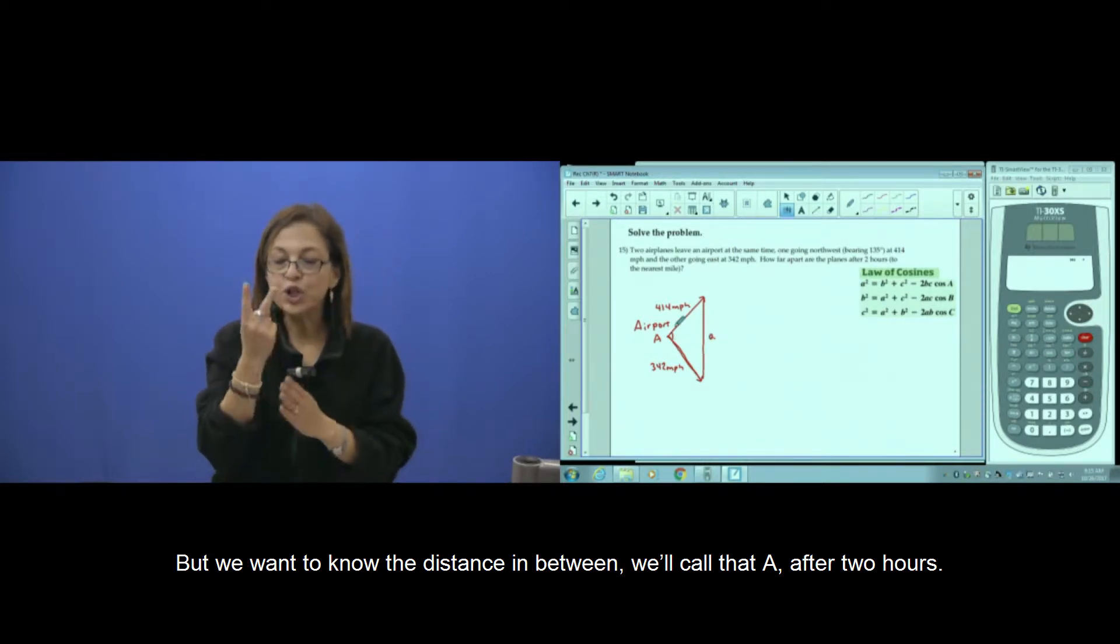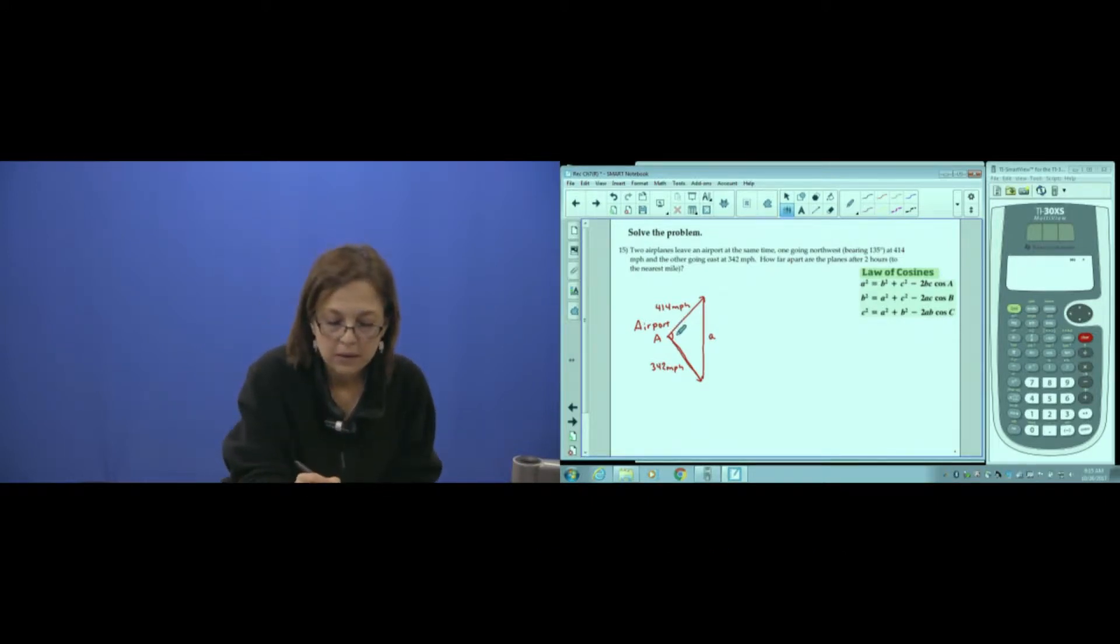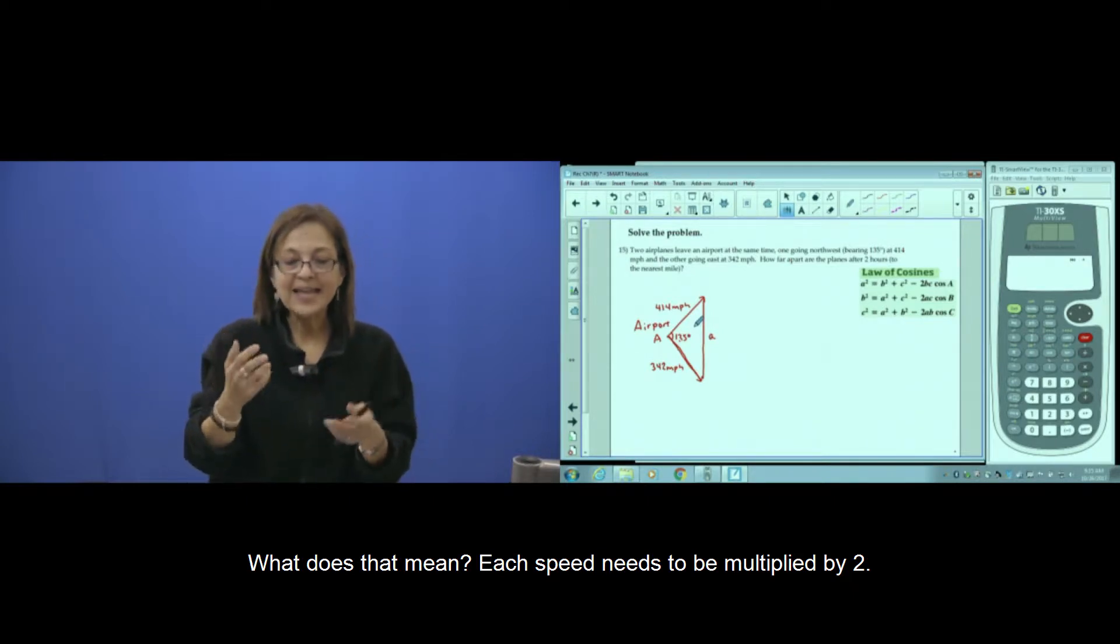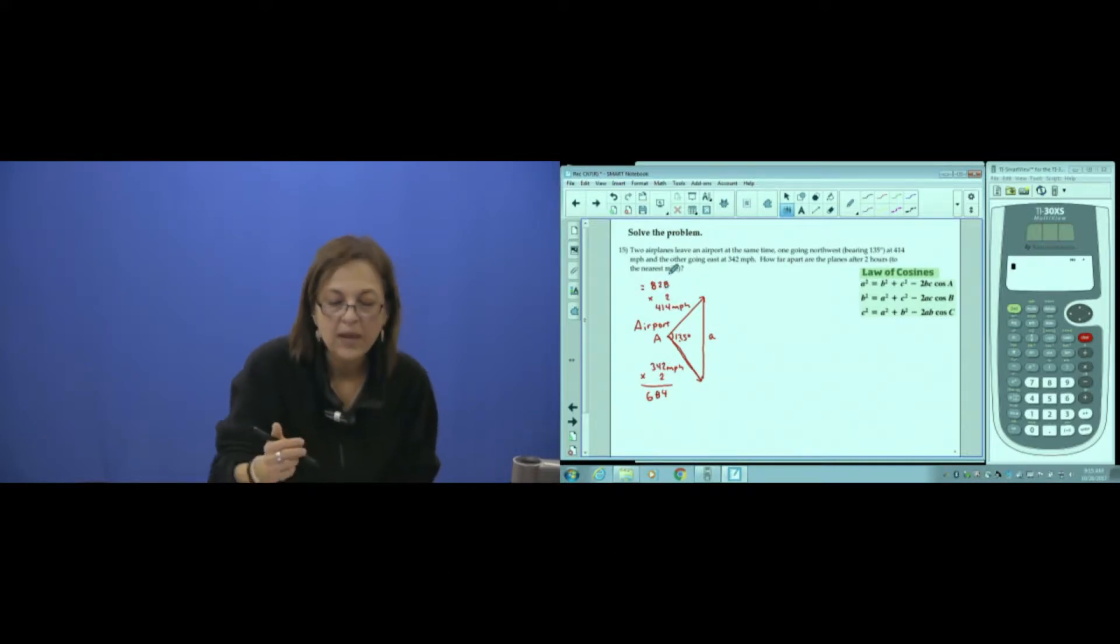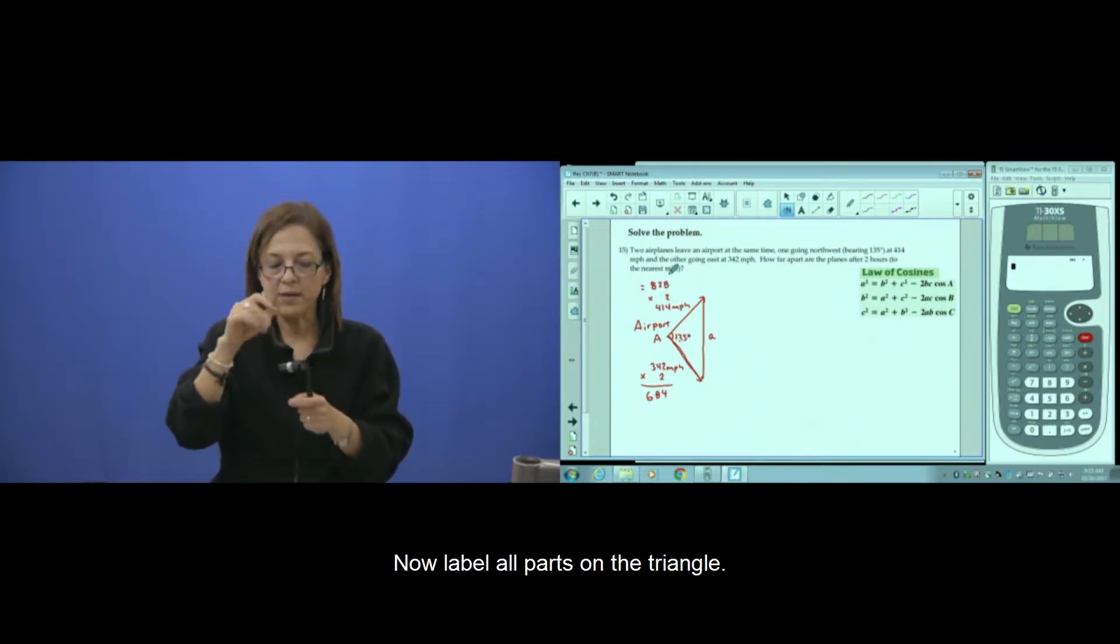After two hours. Each speed needs to be multiplied by 2. Now label all parts on the triangle.